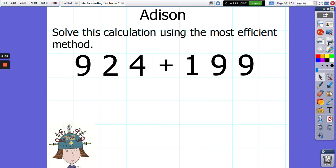Addison. Addison wants us to add those two numbers: 924 and 199, using the most efficient method. Okay, pause the video and use the most efficient method to add those numbers now.